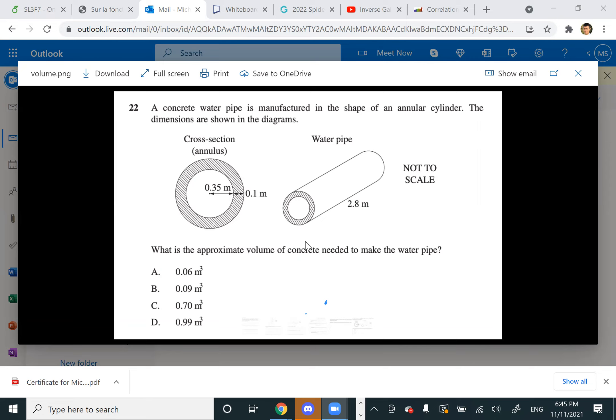Anytime you have a volume where the cross section is the same, you just times the cross-sectional area by the height or the length. Oh, so you literally just do the area of that annulus times 2.8? Yeah. Oh, so I was trying to do it and I just made it so much more complicated than it had to be.